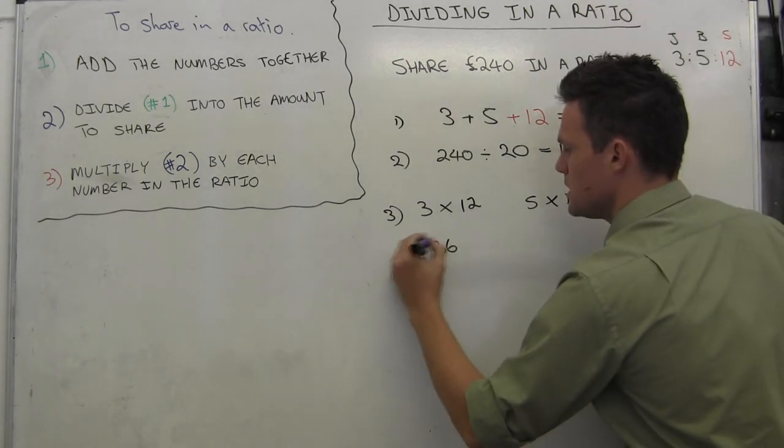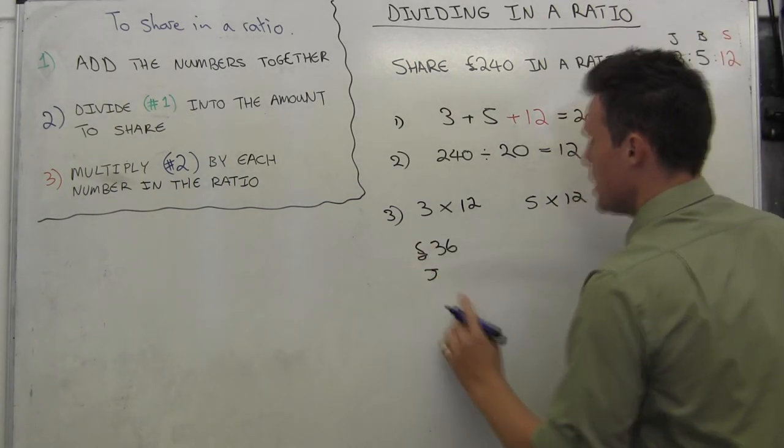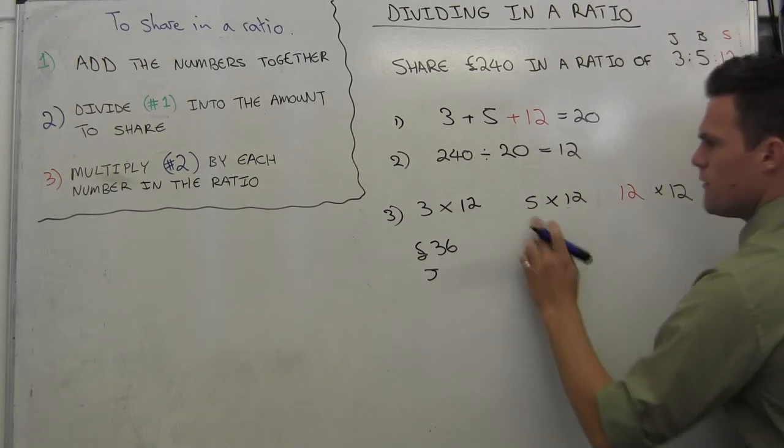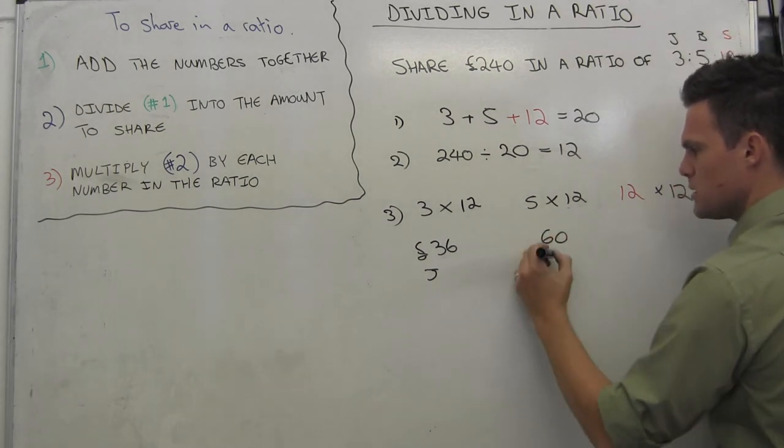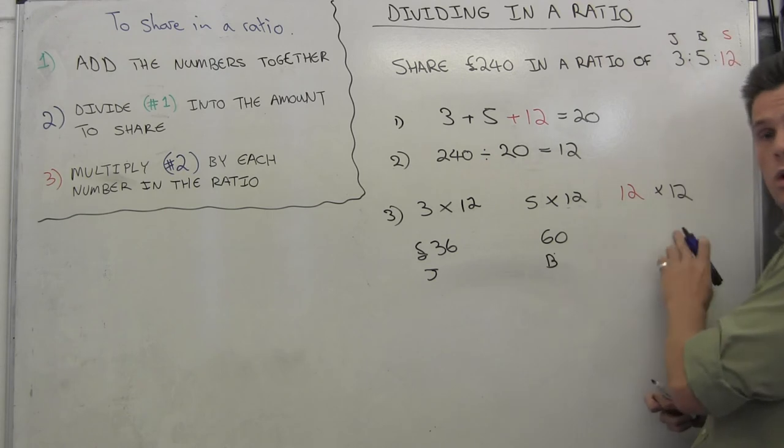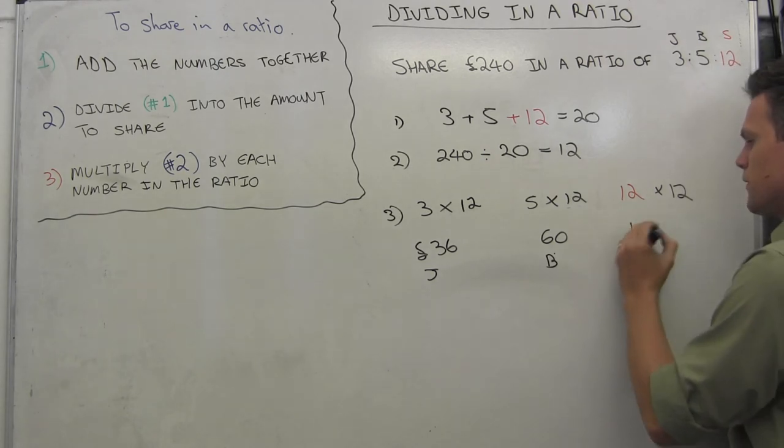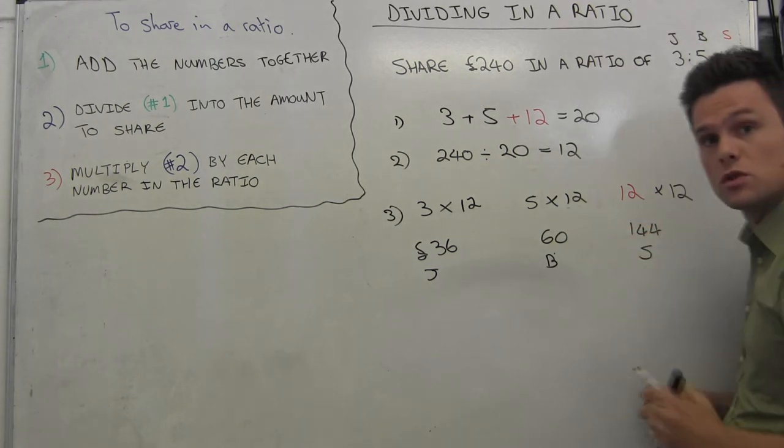So 3 times 12 gives me 36 pounds, that's for Jeff. 5 times 12 gives me 60 pounds, that's for Bill. And 12 times 12 gives me 144 pounds, and that is for Susan.